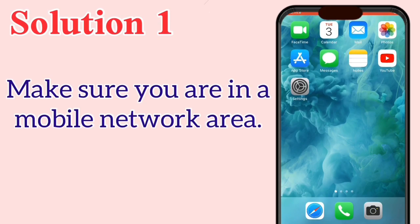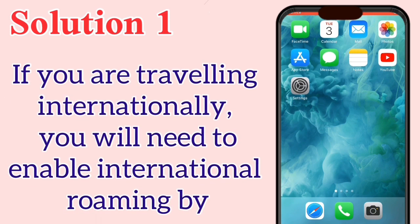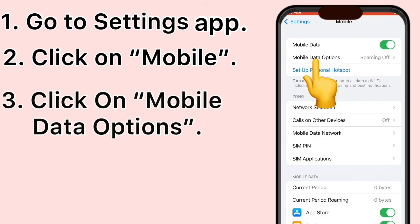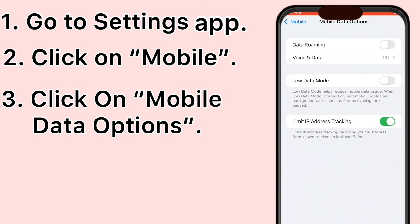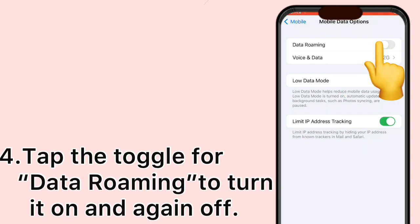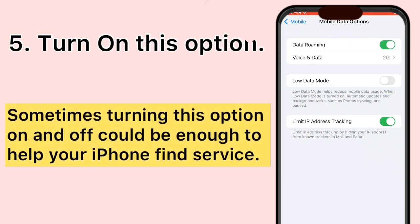Solution 1: Make sure you are in a mobile network area. If you are traveling internationally, you will need to enable international roaming. Go to Settings, click on Mobile, click on Mobile Data Options. Tap the toggle for Data Roaming to turn it on and then off again. Sometimes toggling this option could be enough to help your iPhone find service.